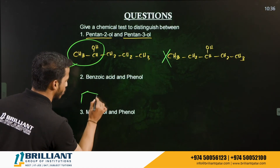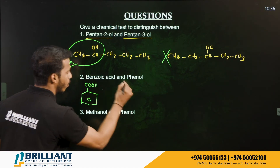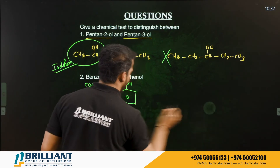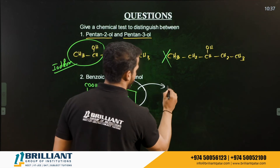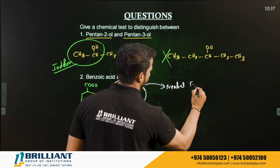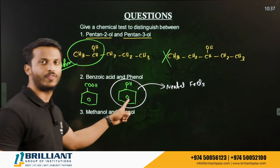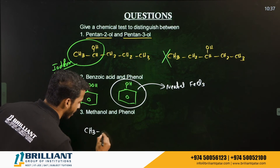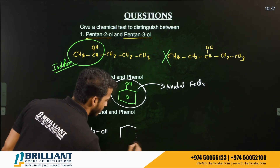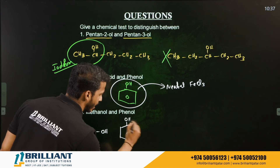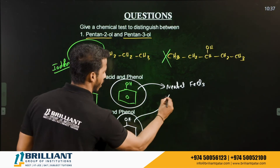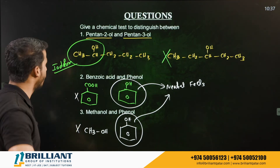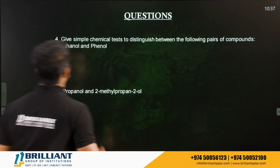Question: Distinguish between benzoic acid (benzene with –COOH) and phenol (benzene with –OH). We use the neutral ferric chloride test — phenol gives a violet-colored complex with FeCl₃, while benzoic acid does not. Similarly, to distinguish methanol (CH₃OH) from phenol, the same neutral ferric chloride test applies — only phenol gives the violet color.